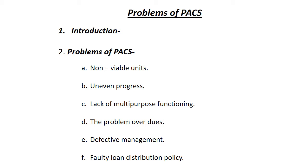The first problem is the problem of non-viable units. There are 98,000 PACS working in our country, but all these PACS are not working up to the mark because the services provided by them are not sufficient for the benefit of farmers. These PACS are not providing multipurpose cooperative society work as assigned in their particular bylaws. PACS should work as a multipurpose cooperative society, but such multipurpose functioning is not seen in the majority of primary agriculture cooperative societies working at the village level.